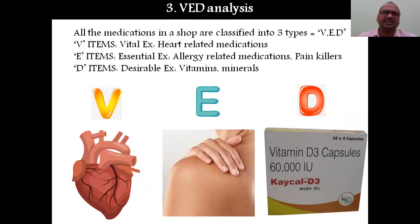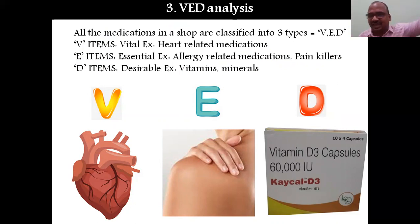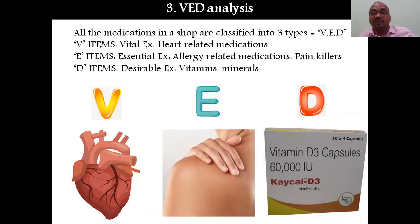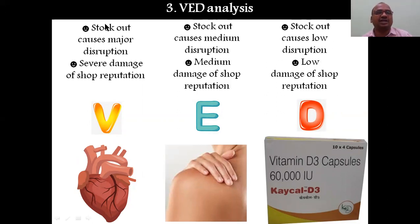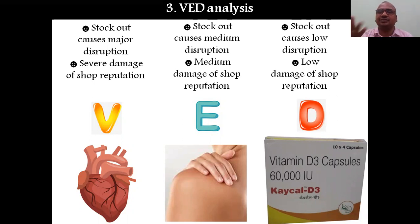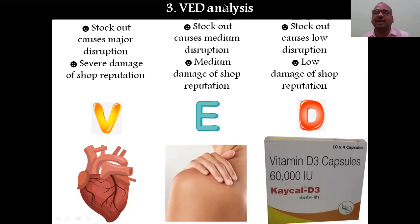VED analysis classifies medicines by importance rather than cost. V (Vital): for example, heart-related medications — these must always be in stock regardless of cost, because a stock-out causes major disruption and severe damage to the shop's reputation. E (Essential): stock-out causes medium disruption. D (Desirable): stock-out causes low damage to reputation. This classification ensures life-saving drugs are never out of stock.